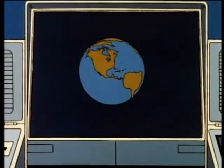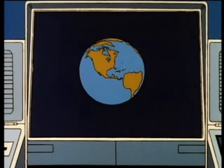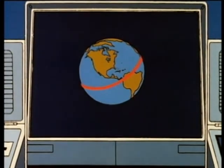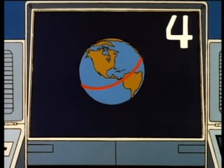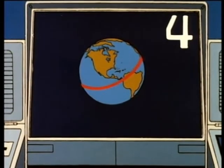There's another straight line on Earth that we need to know about. It goes all the way around the globe at its middle, like a belt. For four points, what is this imaginary line?